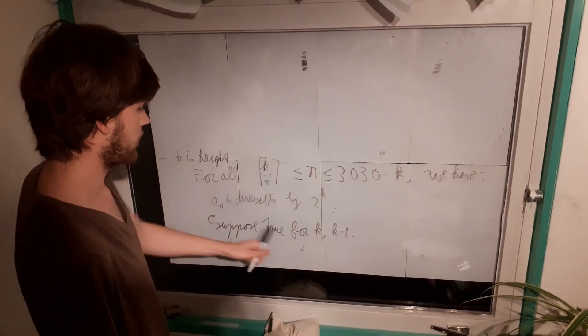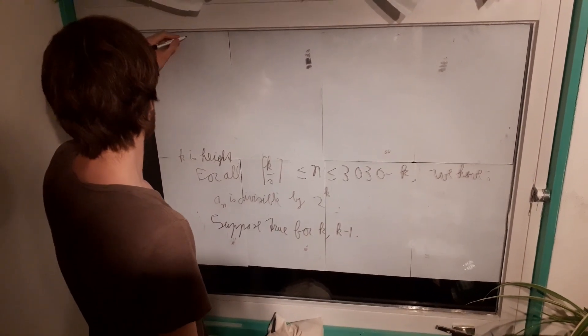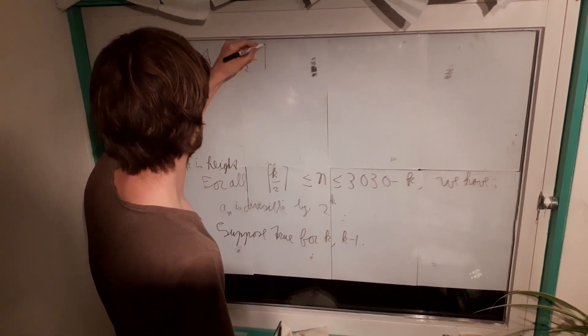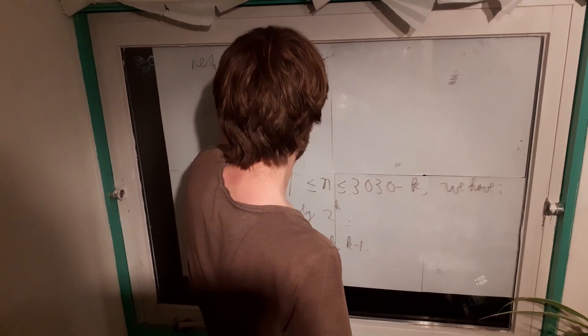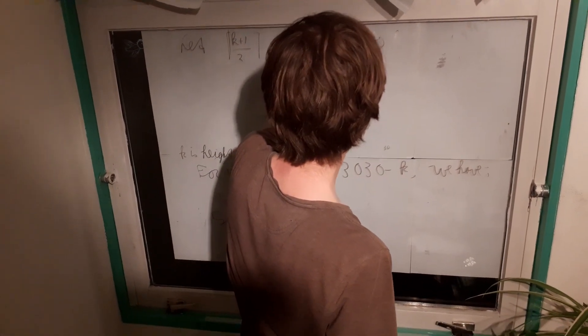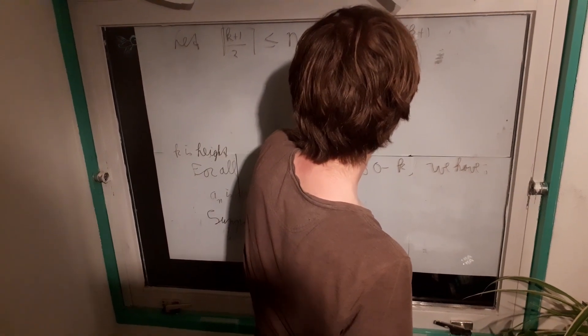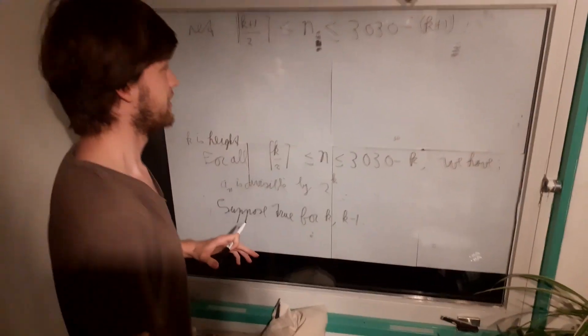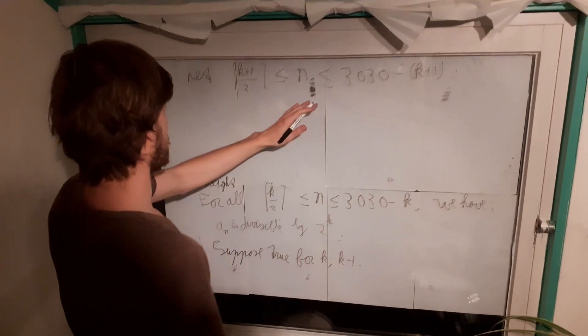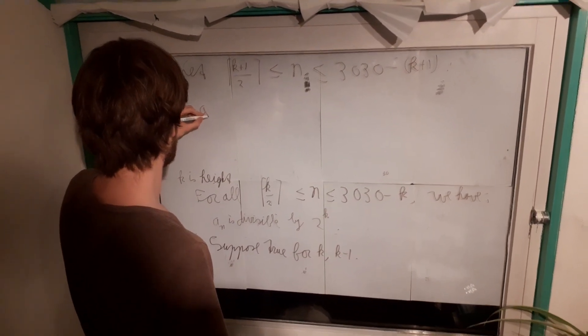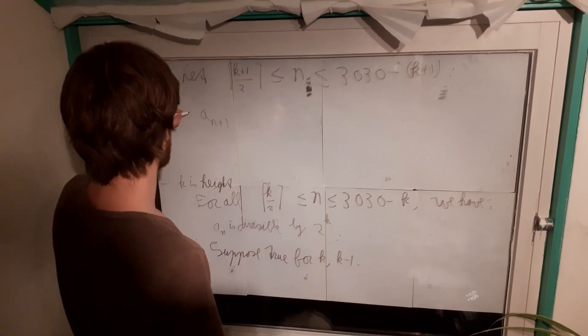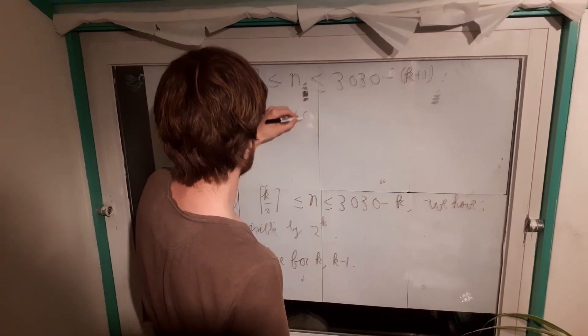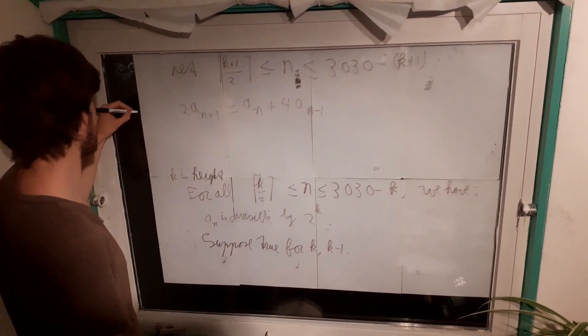So unfortunately, I will have to erase this beautiful cake now. Alright. So we want to prove this statement for k plus 1. So let n between k plus 1 over 2 and 3030 minus k plus 1. And we are going to apply the formula for a_n. So we are going to change variables just 1 lower. 2a_{n+1} equals a_n plus 4a_{n-1}. This is what we know from star.